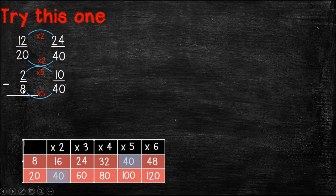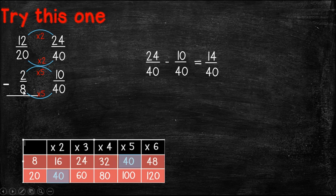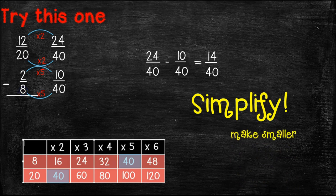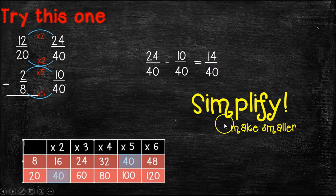So our new problem is 24 fortieths minus 10 fortieths, and we know that's 14 fortieths. But we're not quite done. We need to simplify, which means make that number smaller. So we know these are both even numbers, so we can divide them by 2. So 40 divided by 2 is 20. 14 divided by 2 is 7. So our answer to this problem in its most simplified form is 7 twentieths.